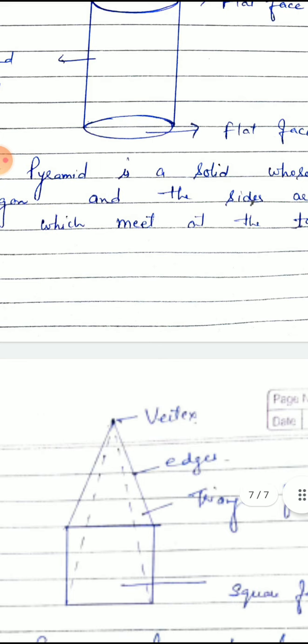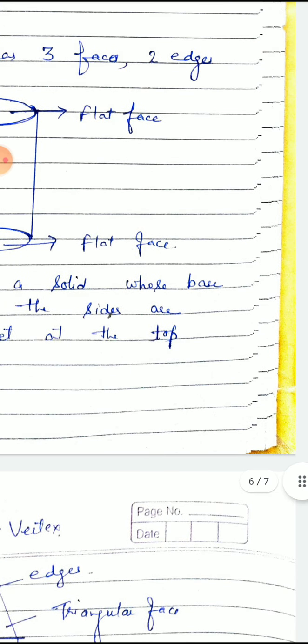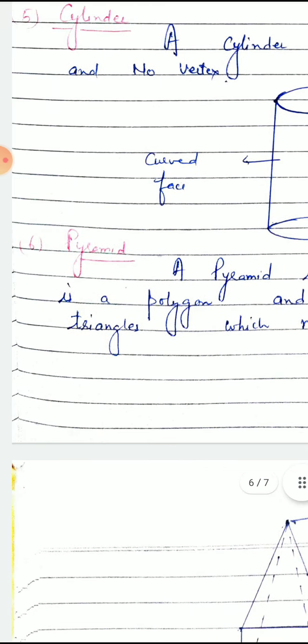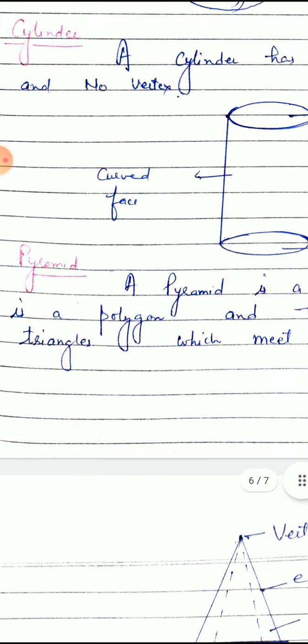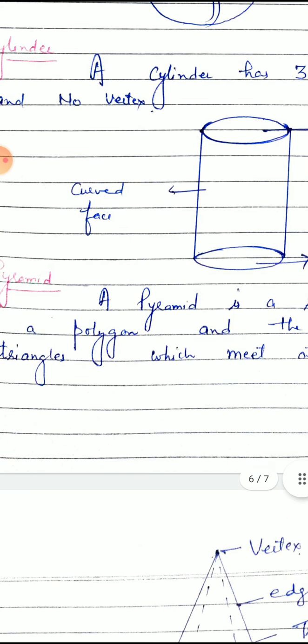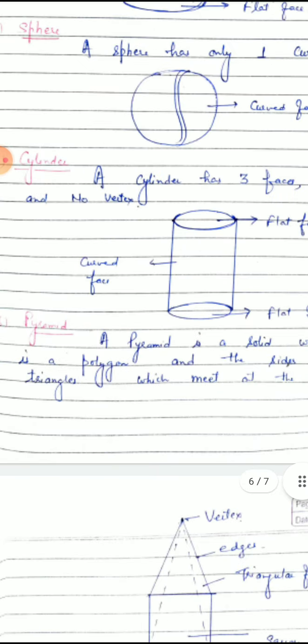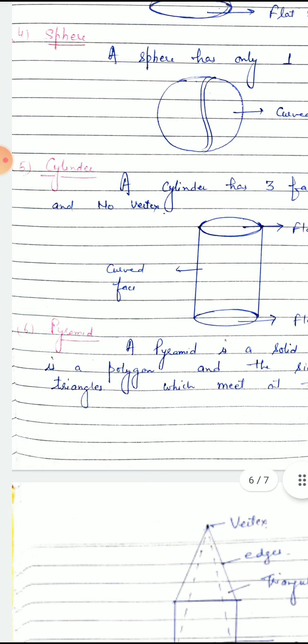A pyramid is a solid whose base is a polygon. Polygon means you learned in previous chapter what is polygon: a figure made by more than two line segments.